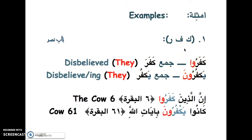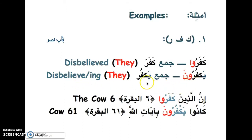We have four examples: 'kafaru' — they disbelieved; 'kafara' — he disbelieved; 'yakfurun' — they are disbelieving; 'yakfur' — he disbelieves. 'Inna alladhina kafaru' is from Al-Baqarah, verse 6. 'Kanu yakfuruna bi ayatillah' is from Al-Baqarah, verse 61.